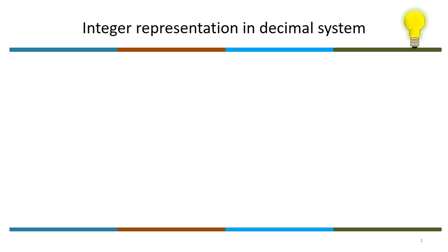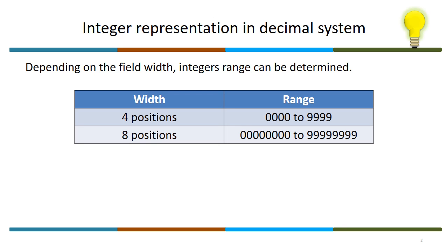We'll start with representing integers in a decimal system. The range of integers we can represent depends on the field width. If it's 4 positions, it's 0 to 9999, and if it's 8 positions, it's 0 to all nines.